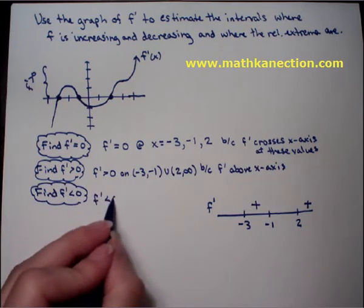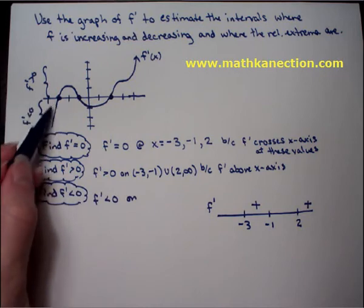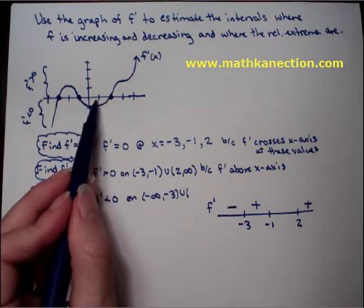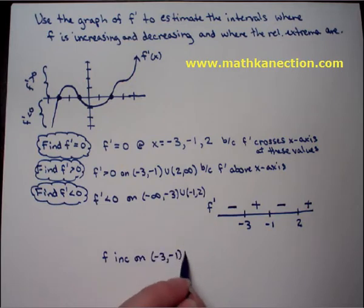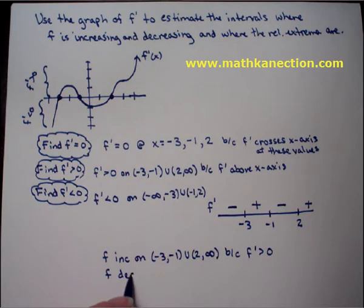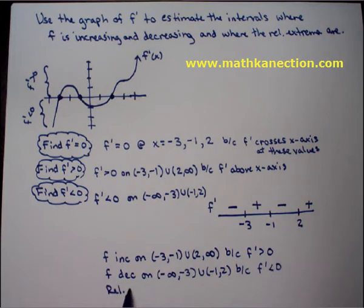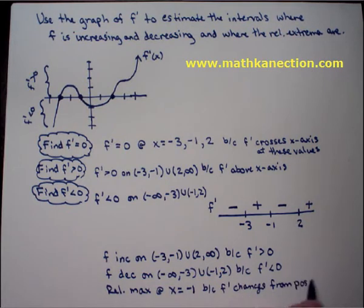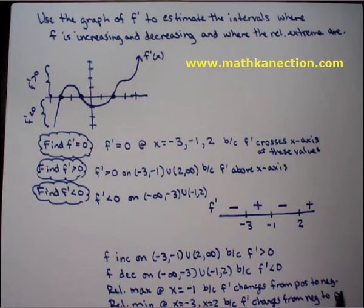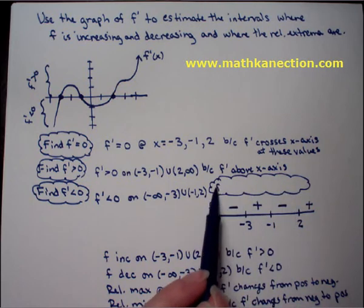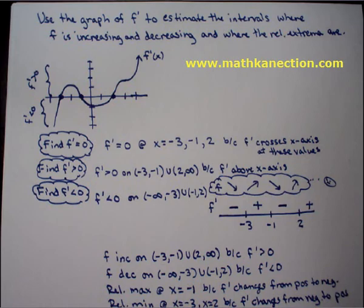Placing positive symbols on the number line, f prime is less than 0 on (-∞, -3) ∪ (-1, 2) because f prime is below the x-axis. Therefore, f is increasing on (-3, -1) ∪ (2, ∞) because f prime was positive, and f is decreasing on (-∞, -3) ∪ (-1, 2) because f prime was negative. There is a relative max at x = -1 because f prime changes from positive to negative, and a relative min at x = -3 and x = 2 because f prime changes from negative to positive. Visualizing f: decreasing, increasing, decreasing, then increasing again.